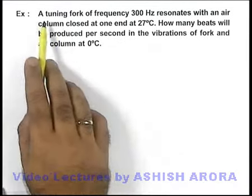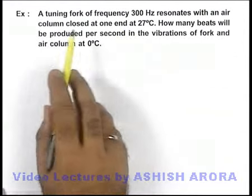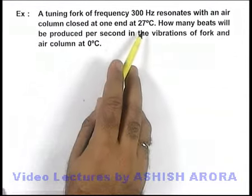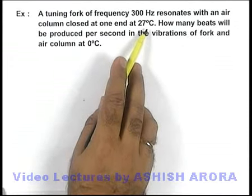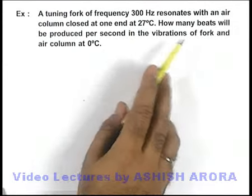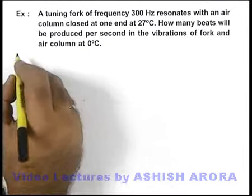In this example, we are given that a tuning fork of frequency 300 hertz resonates with an air column closed at one end at 27 degrees centigrade, that is at 300 kelvin absolute temperature. It is asking how many beats will be produced per second in the vibration of fork and air column at zero degrees centigrade.